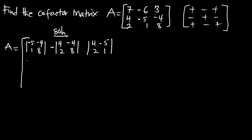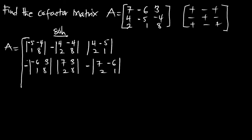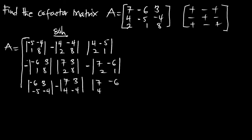At the second row, first element (negative sign attached): sub-matrix is negative 6, 3, 1, 8. Second row, second element (positive): 7, 3, 2, 8. Second row, third element (negative): 7, negative 6, 2, 1. Third row, first element (positive): sub-matrix is negative 6, 3, negative 5, negative 4. Third row, second element (negative): 7, 3, 4, negative 4. Third row, third element (positive): 7, negative 6, 4, negative 5.